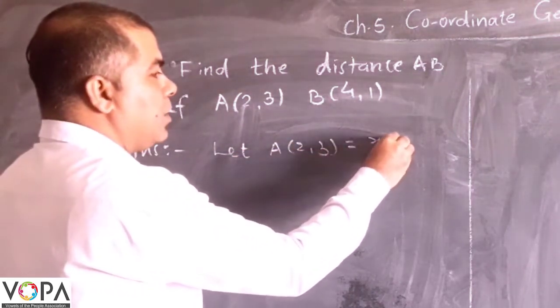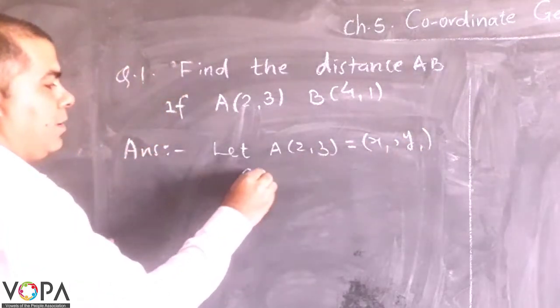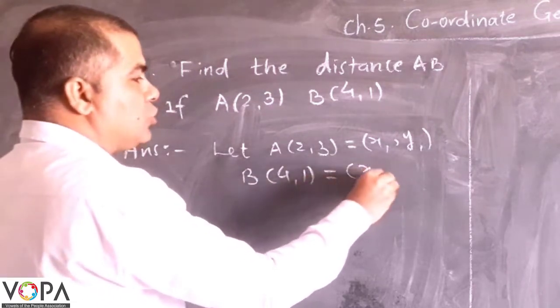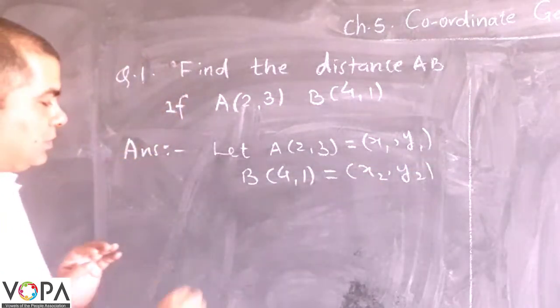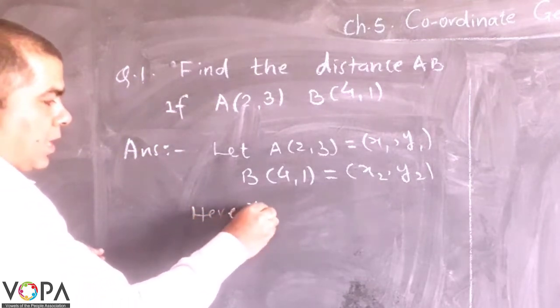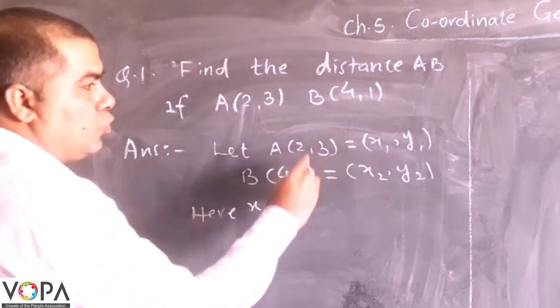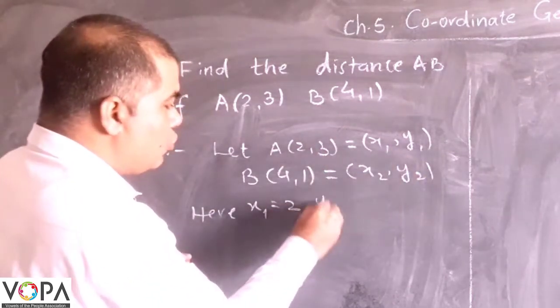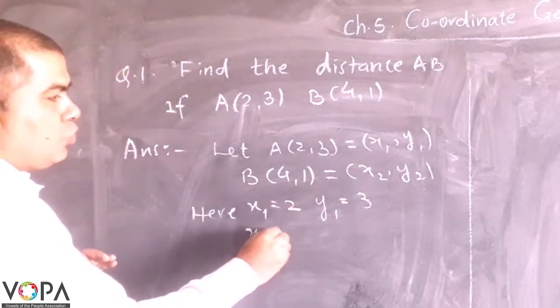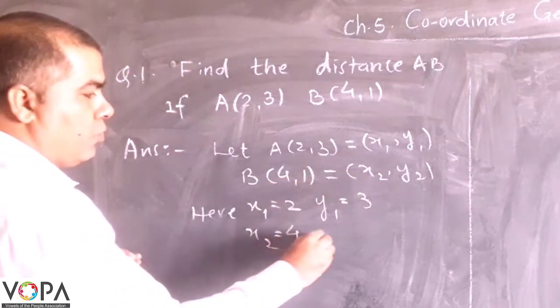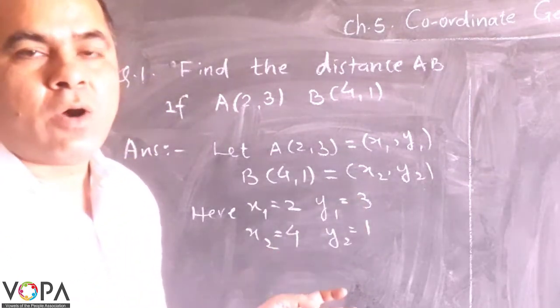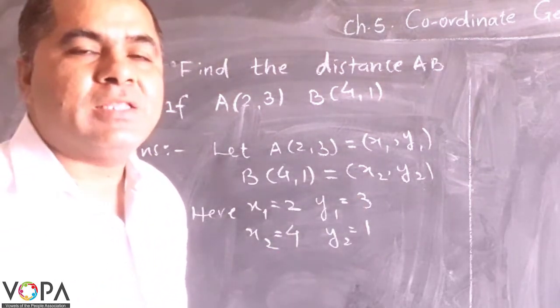Let A(2,3) equals to (x1,y1) and B(4,1) equals to (x2,y2). That is here x1 equals to 2, y1 equals to 3, x2 equals to 4, and y2 equals to 1. Now we apply the distance formula.